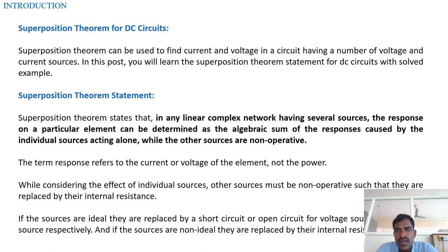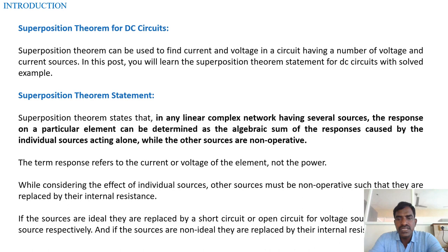While considering the effect of individual sources, other sources must be non-operative, such that they are replaced by their internal resistance. If the sources are ideal, they are replaced by short circuit or open circuit for voltage sources and current sources respectively. If the sources are non-ideal, they are replaced by their internal resistance.